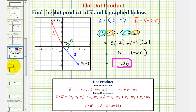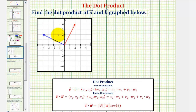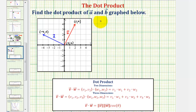Let's look at one more example with two different vectors. The blue vector is vector A again and the red vector is vector B. Both initial points are at the origin, zero comma zero. The terminal point of vector A is negative four comma two, and vector B has its terminal point at two comma four. So vector A has an x-component of negative four and a y-component of positive two, and vector B has an x-component of positive two and a y-component of positive four.